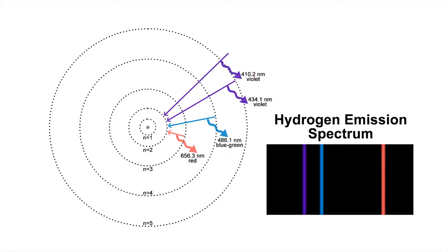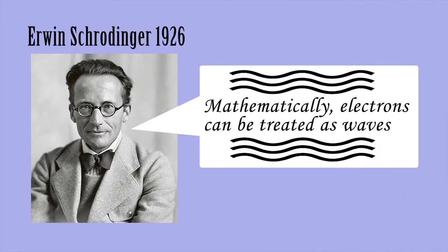Bohr's model can be used to explain why samples of hydrogen emit or absorb particular frequencies of light.